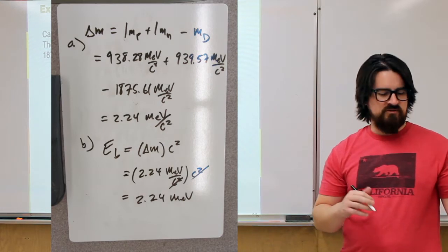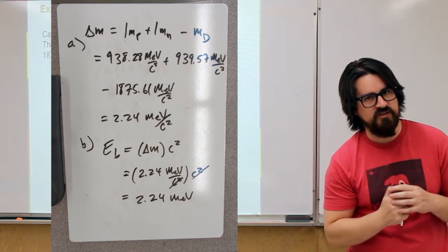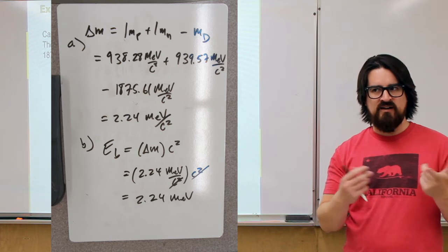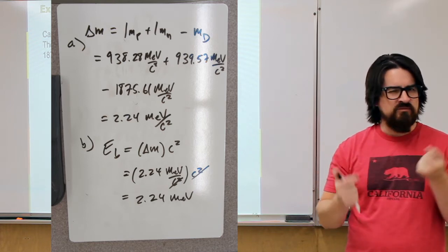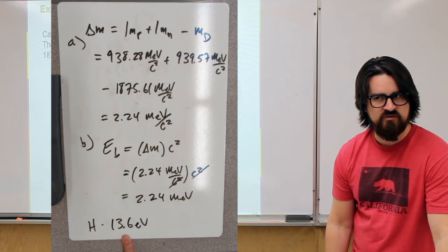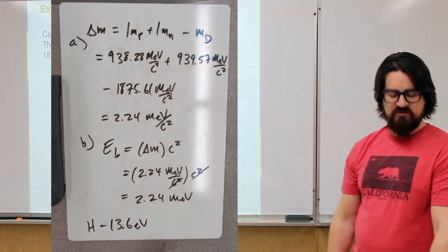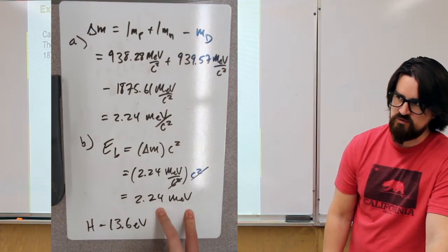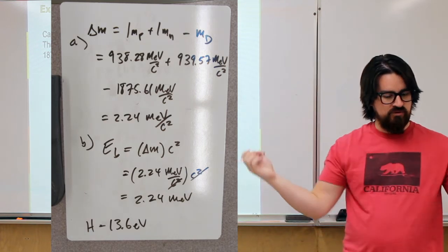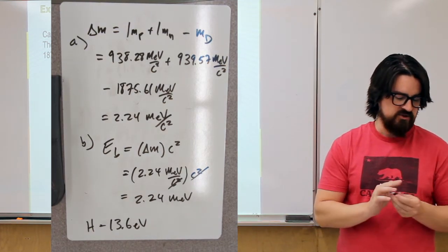Comparing this to chemical binding energies: the energy to remove the electron from a hydrogen atom in its lowest state is 13.6 eV. Compare that to the energy needed to pull apart a deuteron nucleus — about 2.24 MeV — which is something like a hundred thousand times greater than the energy to remove an electron from hydrogen.